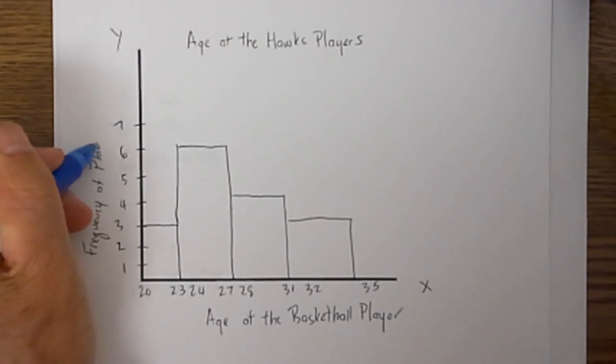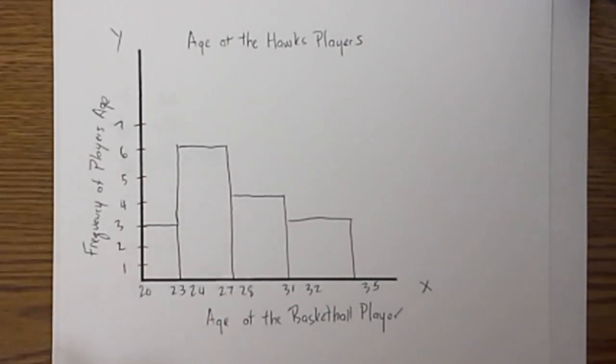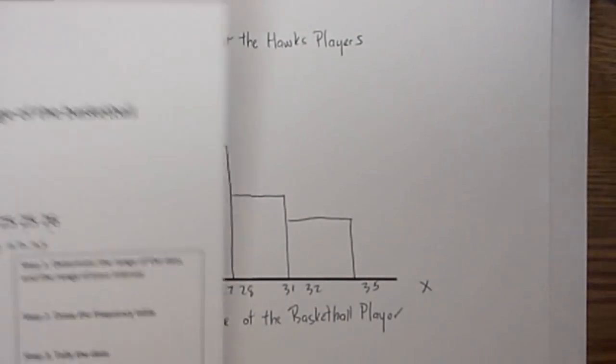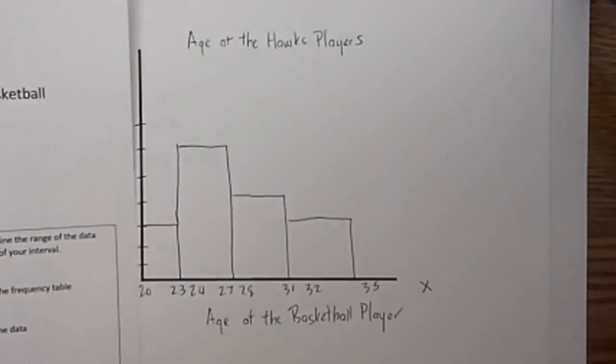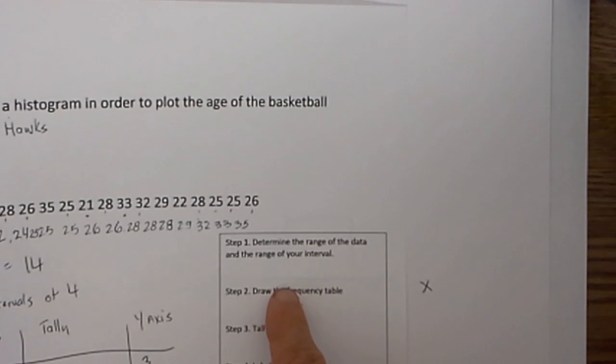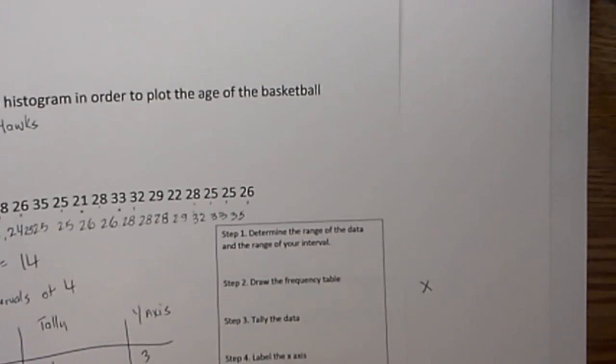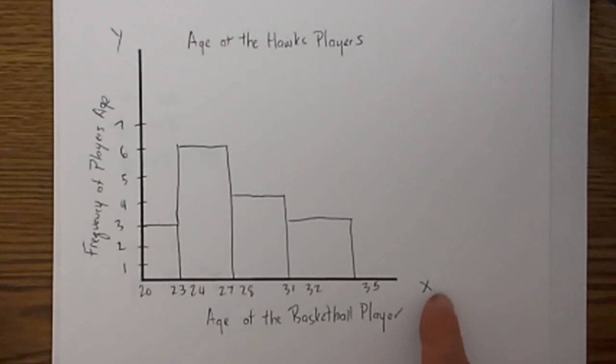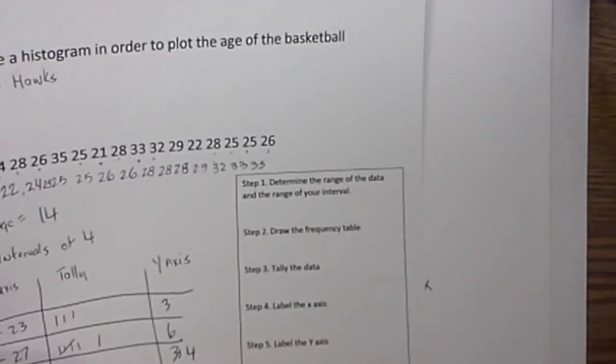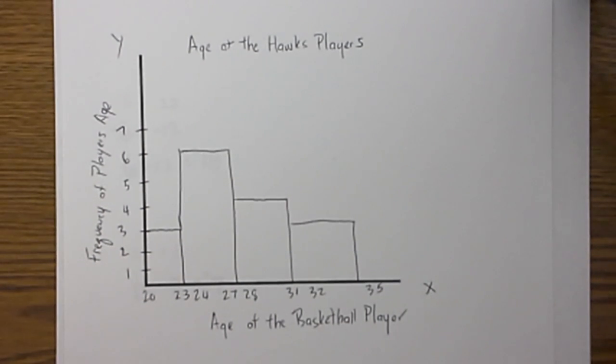Now let's check to see if we have done everything on our checklist. We have drawn the frequency table, we have tallied the data. Did we label the x axis? Yes. Did we label the y axis? Yes. And have we titled it? Yes, age of the hawks player. And so there is a histogram.